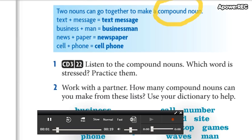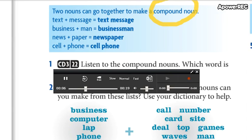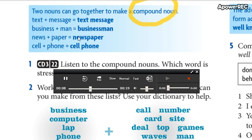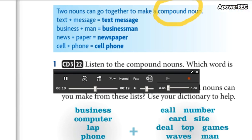Track 22. Words that go together. Text message. Businessman. Newspaper. Cell phone.